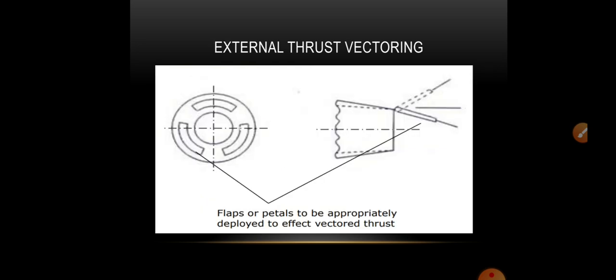Here we can see external thrust vectoring, where we use flaps or petals that are appropriately deployed to affect vectored thrust.